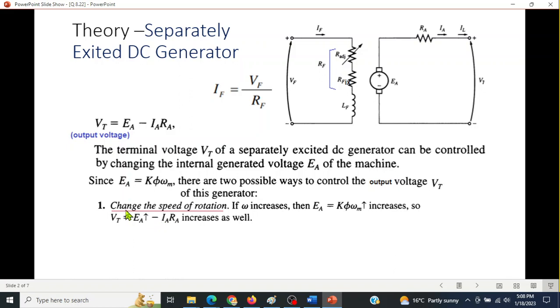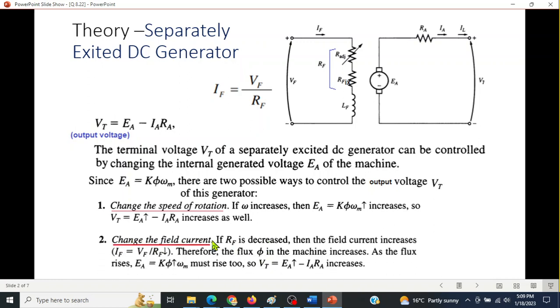So if the speed is increased, Ea will increase, and if Ea increases, then Vt will increase. Similarly, if field current is increased, then the flux will increase. And when flux increases, Ea will increase, and when Ea increases, Vt will increase.